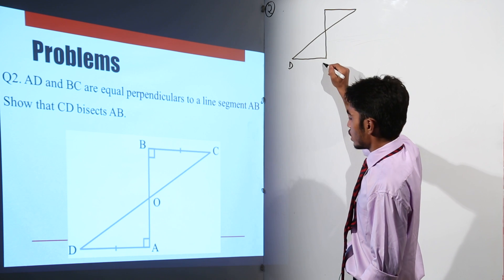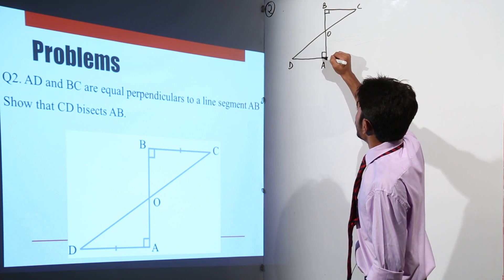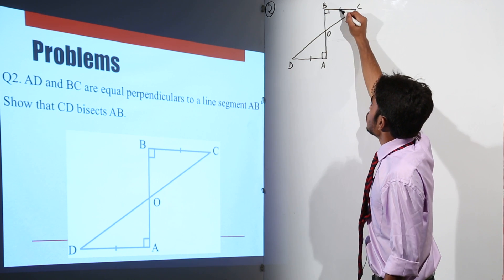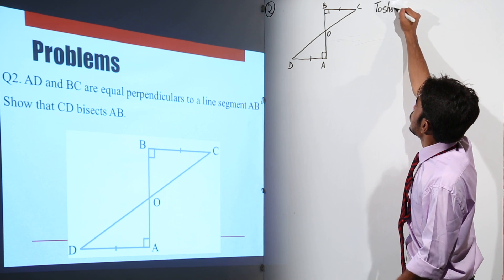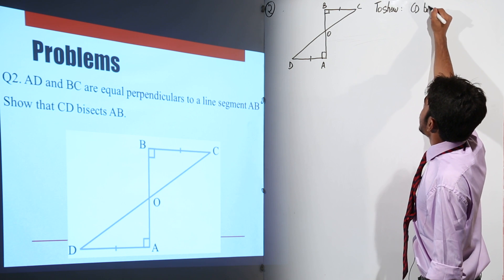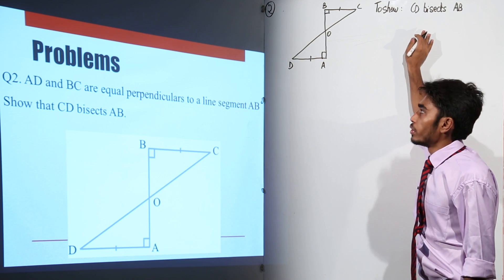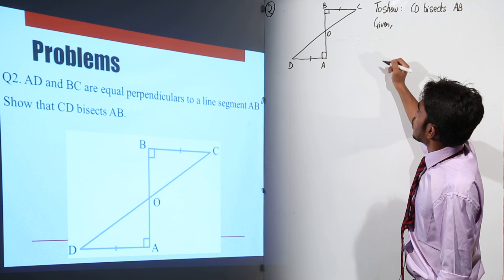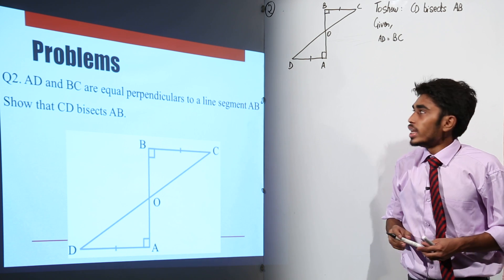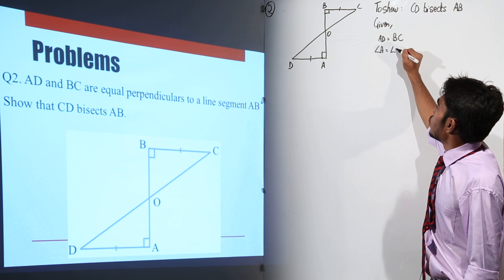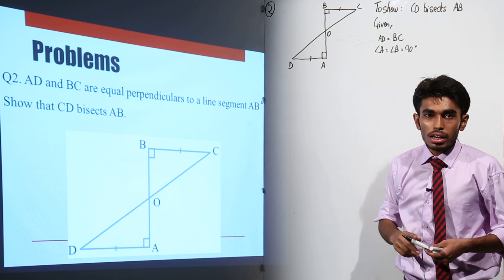This is a triangle. This is point D, A, O, B, and C. We are given that these two angles are 90 degrees and side DA is equal to BC. So let me write down the given conditions. We need to show that CD bisects AB. Given: AD is equal to BC, and angle A is equal to angle B, which is equal to 90 degrees.